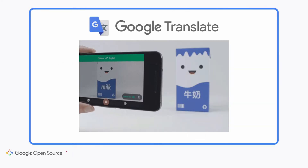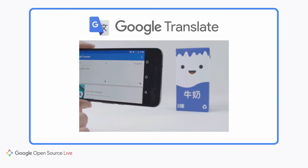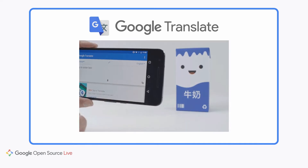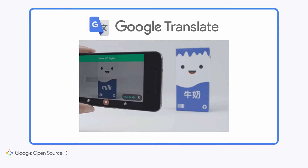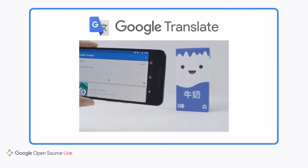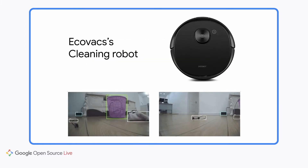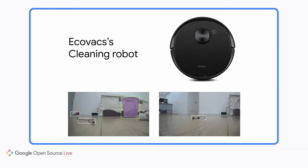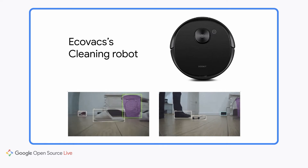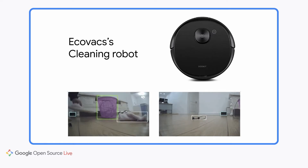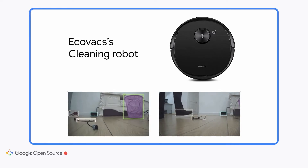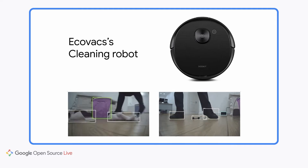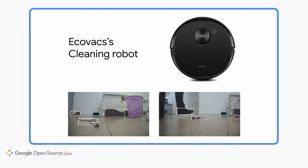Another example is the Google Translate app. It has a feature that allows you to capture text with your phone camera and translate it in real-time without internet connection. Besides smartphone apps, on-device machine learning is also being used in many IoT devices. For example, this cleaning robot from Ecovacs uses on-device machine learning to detect obstacles on the floor so that it can clean without getting stuck.